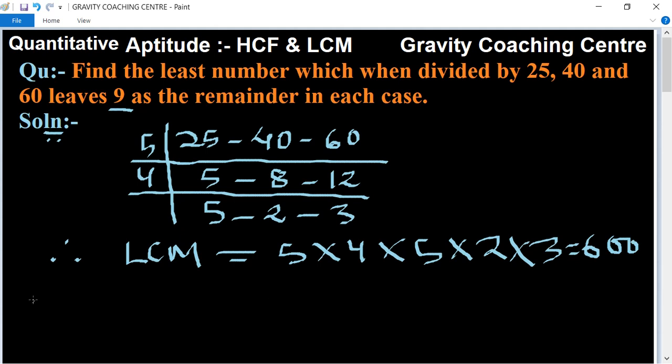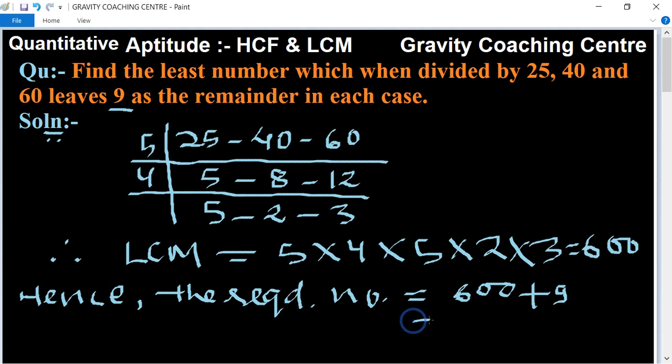Hence, the required number is 600 + 9 = 609, which is the answer.